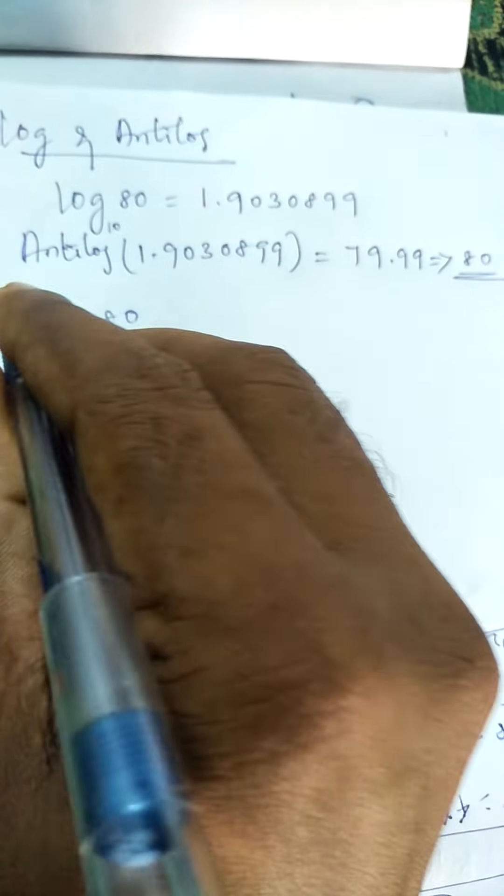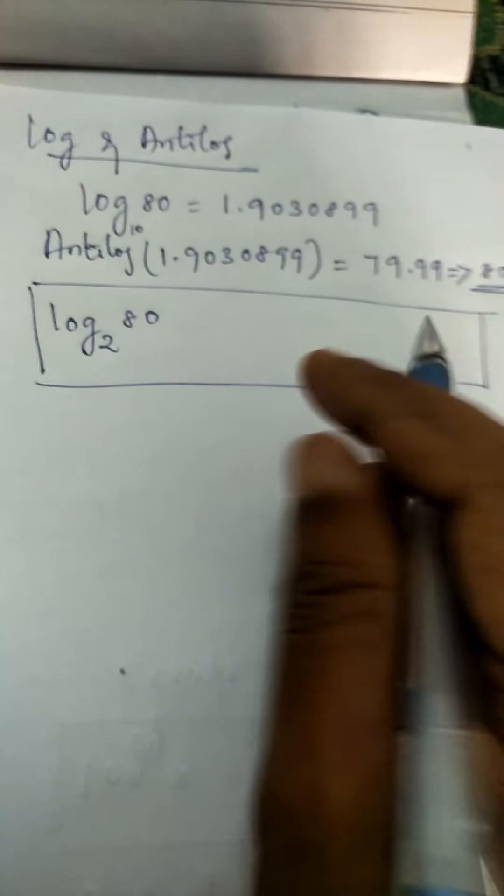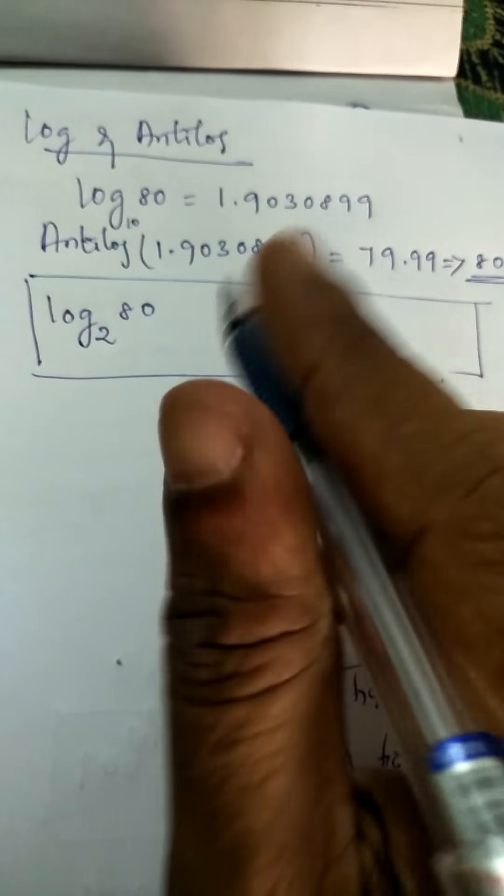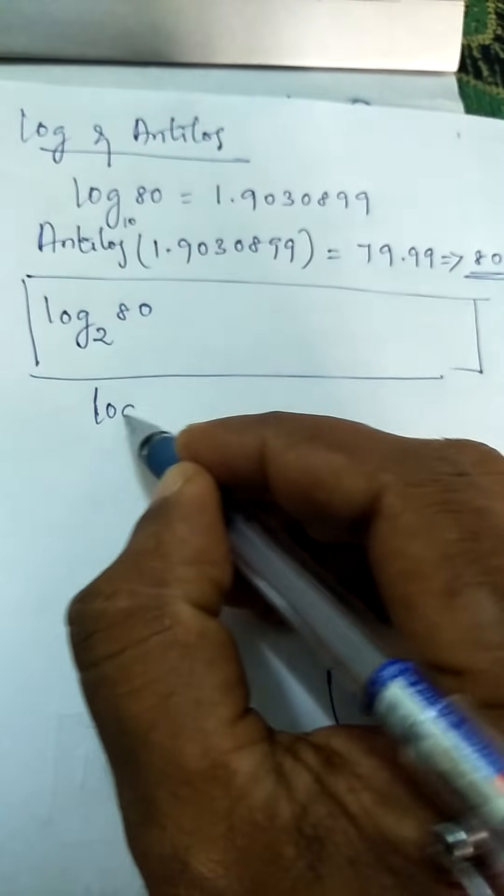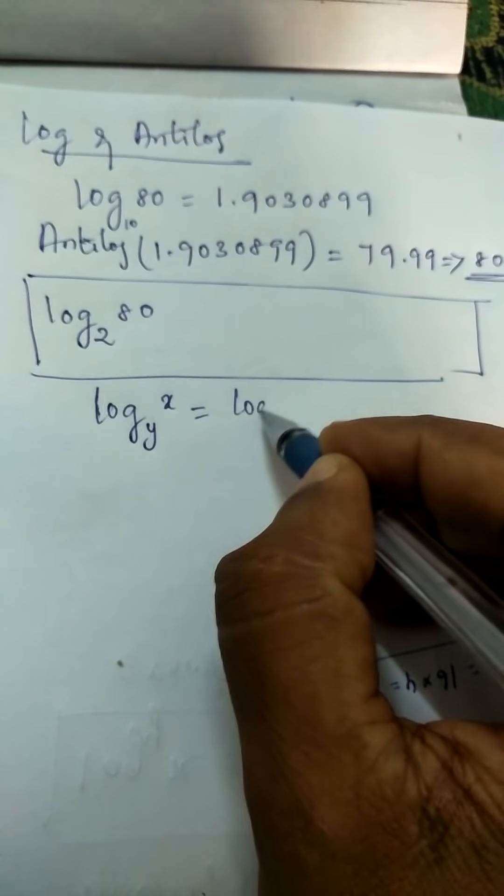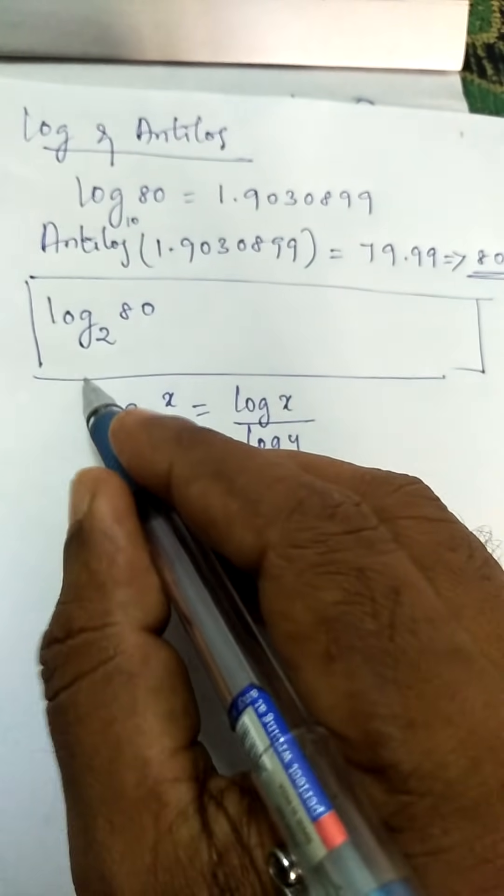You can't substitute the value directly. So we have a formula for that. Log x to the base y is nothing but log x by log y.